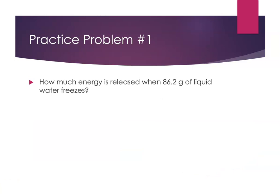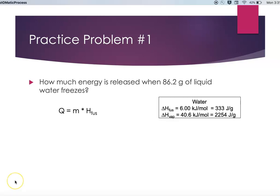Let's do a practice problem. How much energy is released when 86.2 grams of liquid water freezes? Now we're freezing water, so we're at zero degrees Celsius. So we're going to use the heat of fusion. Q equals the mass times the heat of fusion. The heat of fusion and the heat of vaporization for water are well known, and I'm giving you that information. You'll always have access to it. I don't expect you to memorize that.